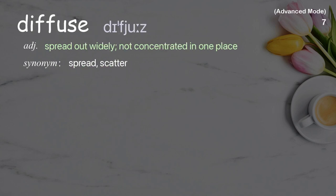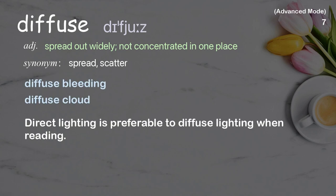Diffuse: spread out widely, not concentrated in one place. Examples: diffuse bleeding, diffuse cloud. Direct lighting is preferable to diffuse lighting when reading.